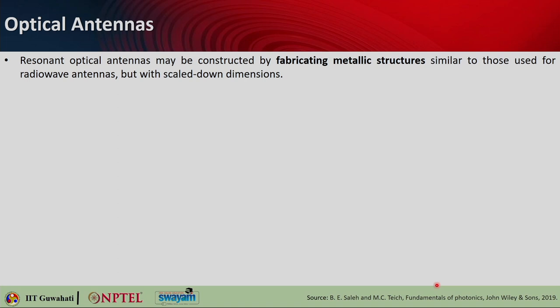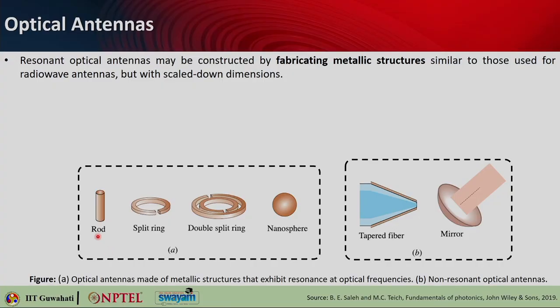Coming to optical antennas or plasmonic antennas, resonant optical antennas may be constructed by fabricating metallic structures similar to those of radio wave antennas. The important thing is to scale down the dimensions, because optical radiation frequency is much higher than radio waves, so the antenna elements at optical frequencies will be much, much smaller. Examples of optical antennas made of metallic structures that exhibit resonance at optical frequencies include rod-type splitrings, double splitrings, and nanospheres.